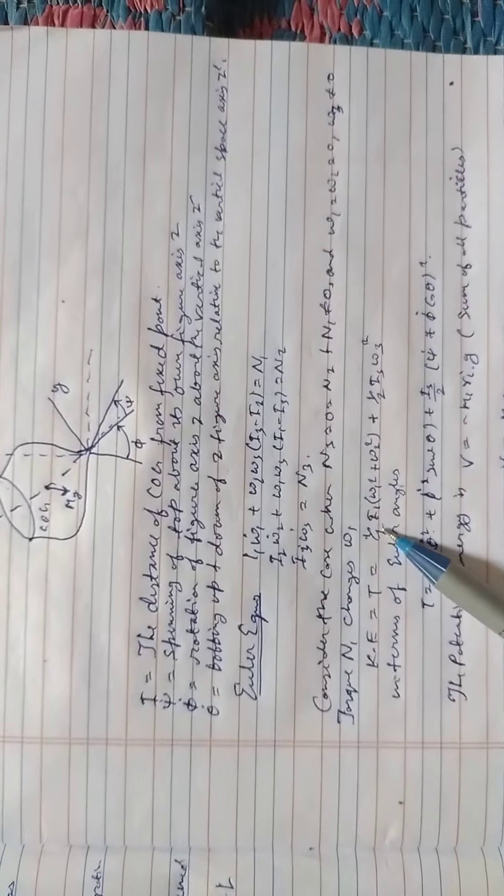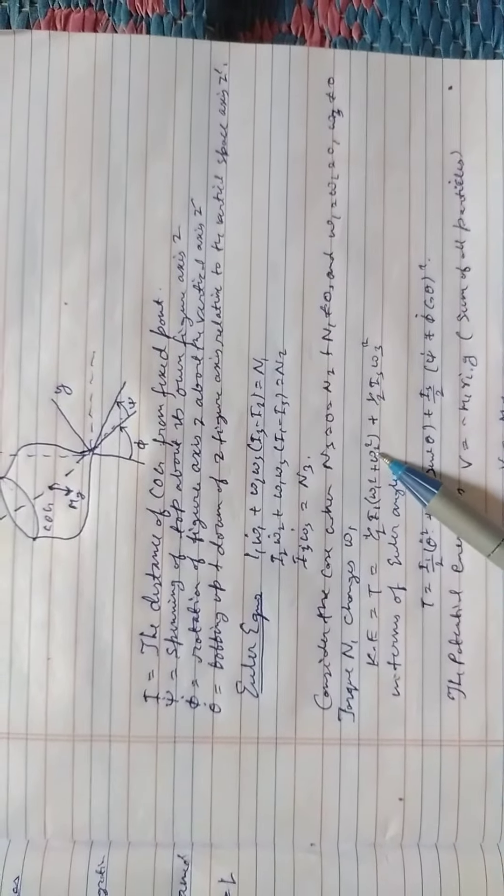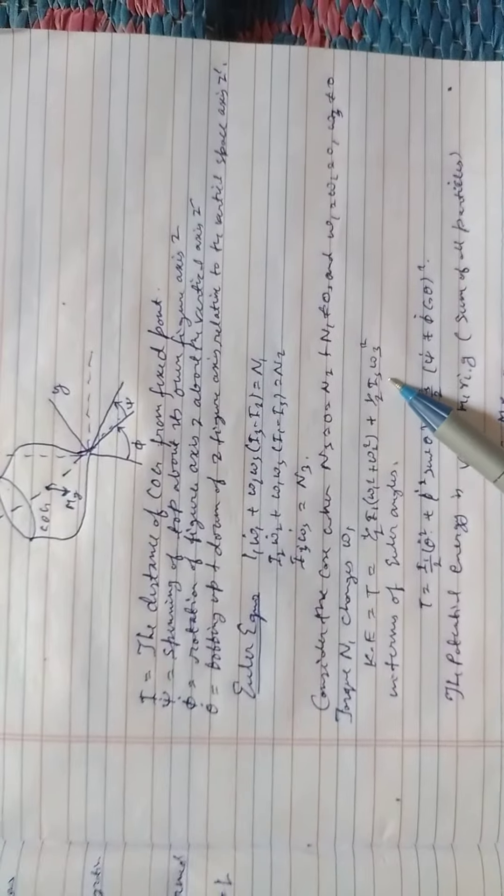Kinetic energy T is equal to half I omega 1 square plus omega 2 square plus half I3 omega 3 square.